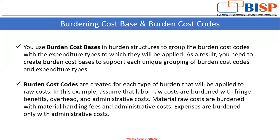Burden cost codes are created for each type of burden that will be applied to raw cost. For example, assume that labor raw costs are burdened with fringe benefits, overhead, and administrative cost. Material raw costs are burdened with material handling fees and administrative cost. Expenses are burdened only with administrative cost. When you create these burden cost base and burden cost codes, you have to assign both of them in the burden structure.